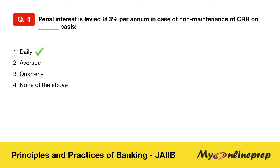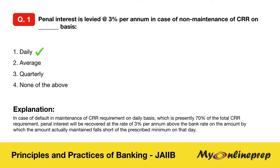Correct — it's daily basis. In case of default in maintenance of CRR requirement on a daily basis, which is presently 70% of the total CRR requirement, penal interest will be recovered at the rate of 3% per annum above the bank rate on the amount by which the amount actually maintained falls short of the prescribed minimum of that day.